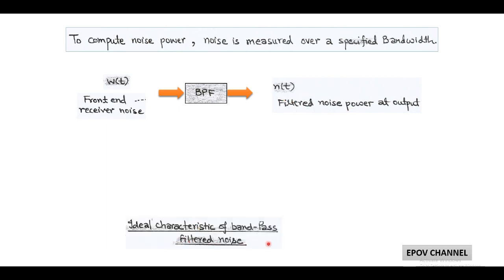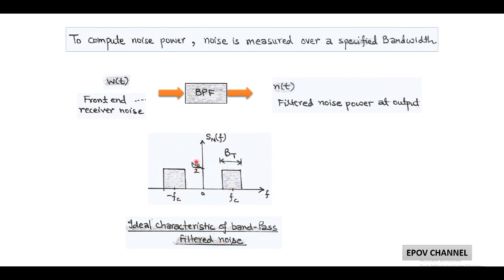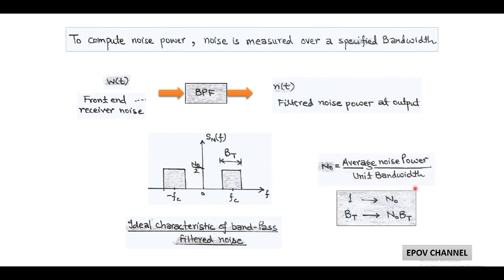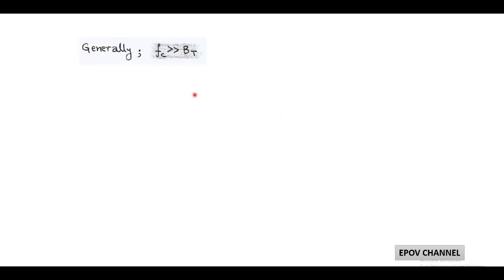The ideal characteristic of band pass filter noise is shown in the figure. It has a power spectral density of N0/2, where N0 is the average noise power per unit bandwidth. This means in one bandwidth the average noise power is N0, and for transmission bandwidth BT its value is N0 × BT. So the filtered noise power at the output is N0 × BT. In the practical case, the carrier frequency is generally far greater than the transmission bandwidth.